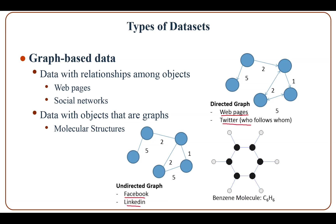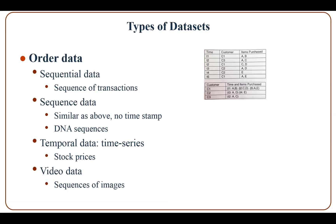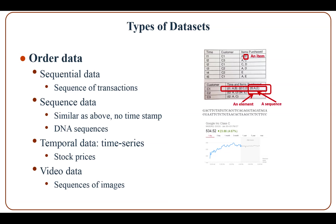The last type is order data. First, we talked about sequential data, which is a sequence of transactions as an example. The second type is sequence data, which is similar but with no timestamp — an example is DNA sequences. With temporal data, the example is stock prices, and with video data, the examples are sequences of images.